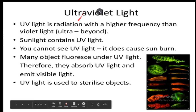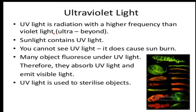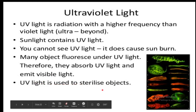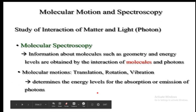Ultraviolet or UV light is radiation with a higher frequency than violet light. Ultra means beyond. Sunlight contains UV light; you cannot see UV light, but it does cause sunburn. Many objects fluoresce under UV light — they absorb UV light and emit visible light. UV light is used to sterilize objects.